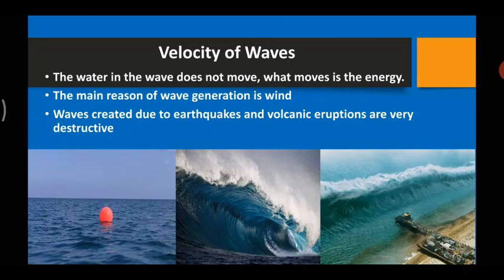When you stand near the coast, you feel the waves are coming towards you. But if a floating object like a ball is thrown into the sea, we find it moving up and down at the same place — it does not come to the coast. This means the water forming the wave does not move to the coast. What moves is the energy. The main reason for wave generation is wind, but sometimes earthquakes or volcanic eruptions on the floor of the sea also generate waves.